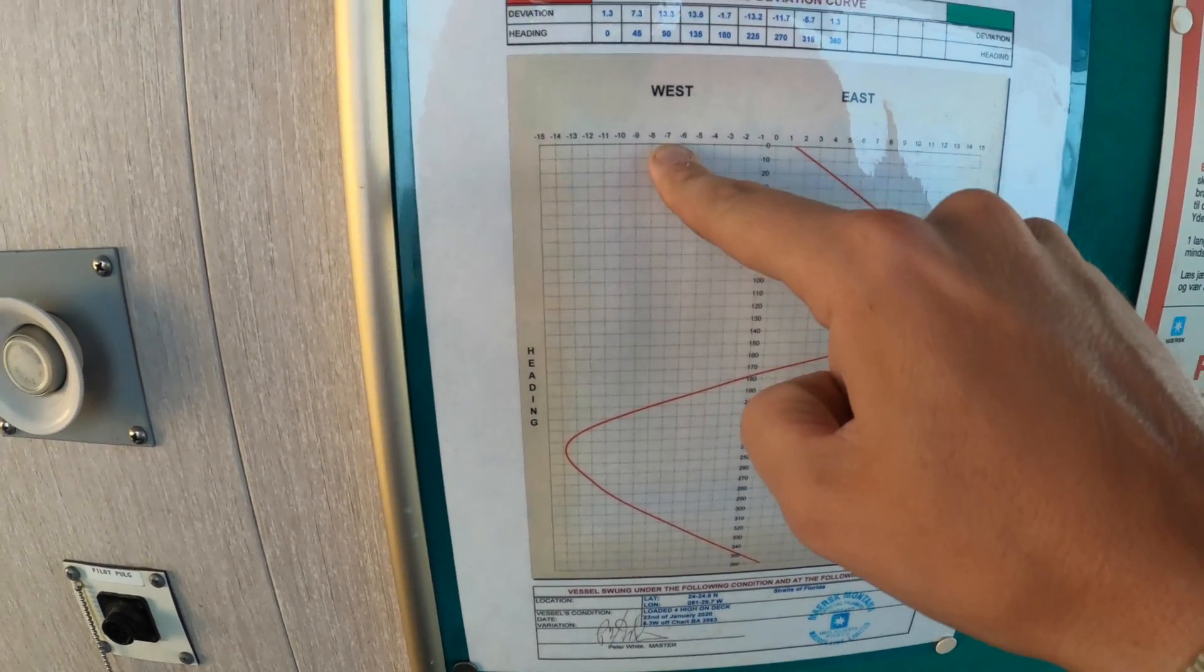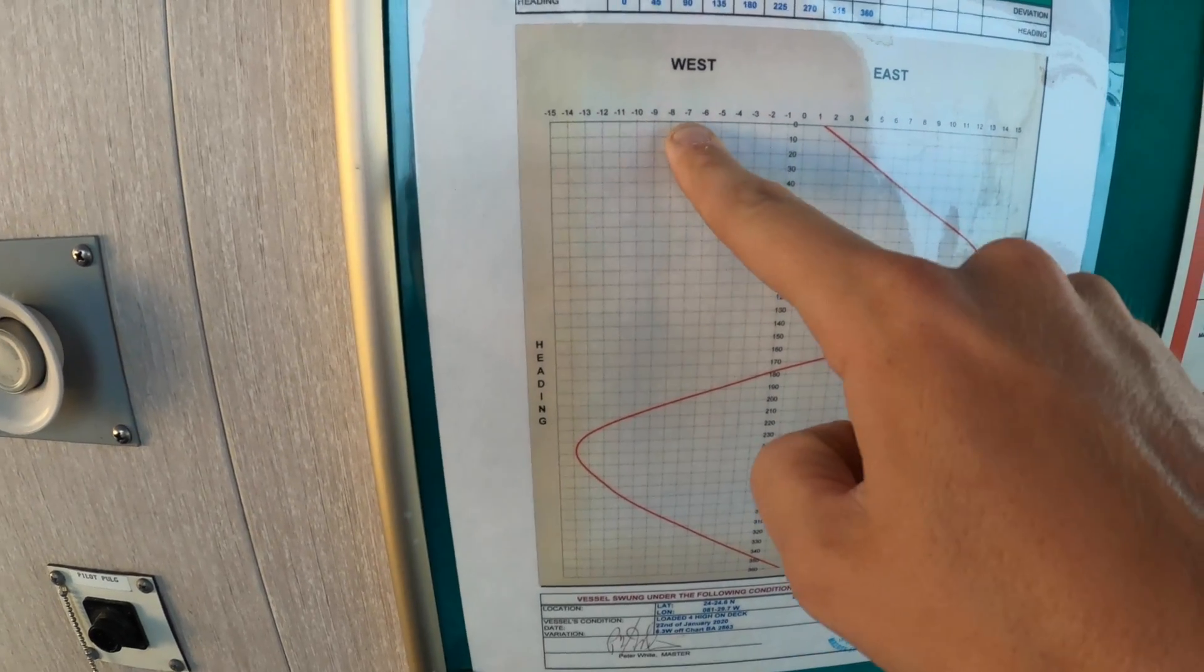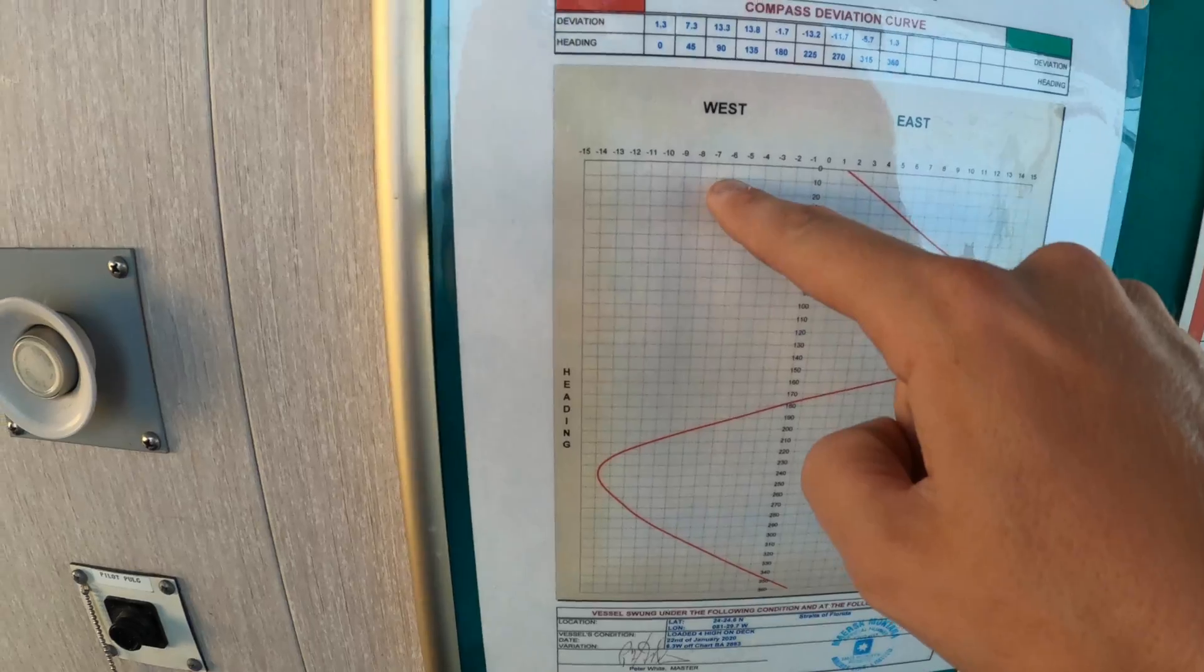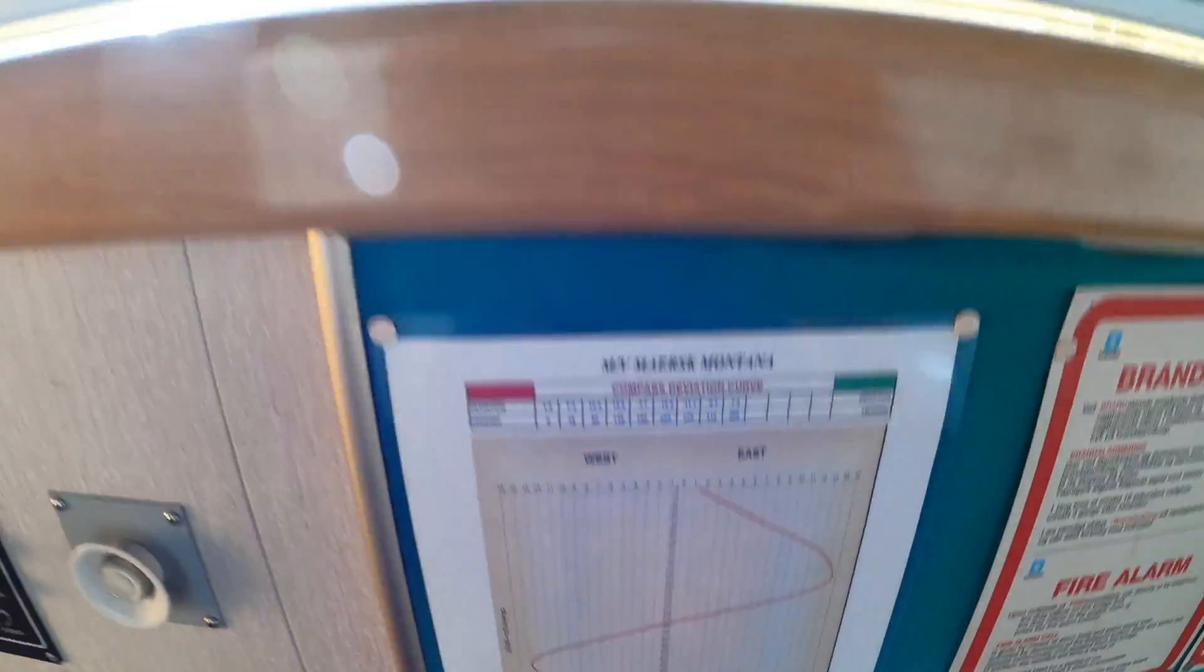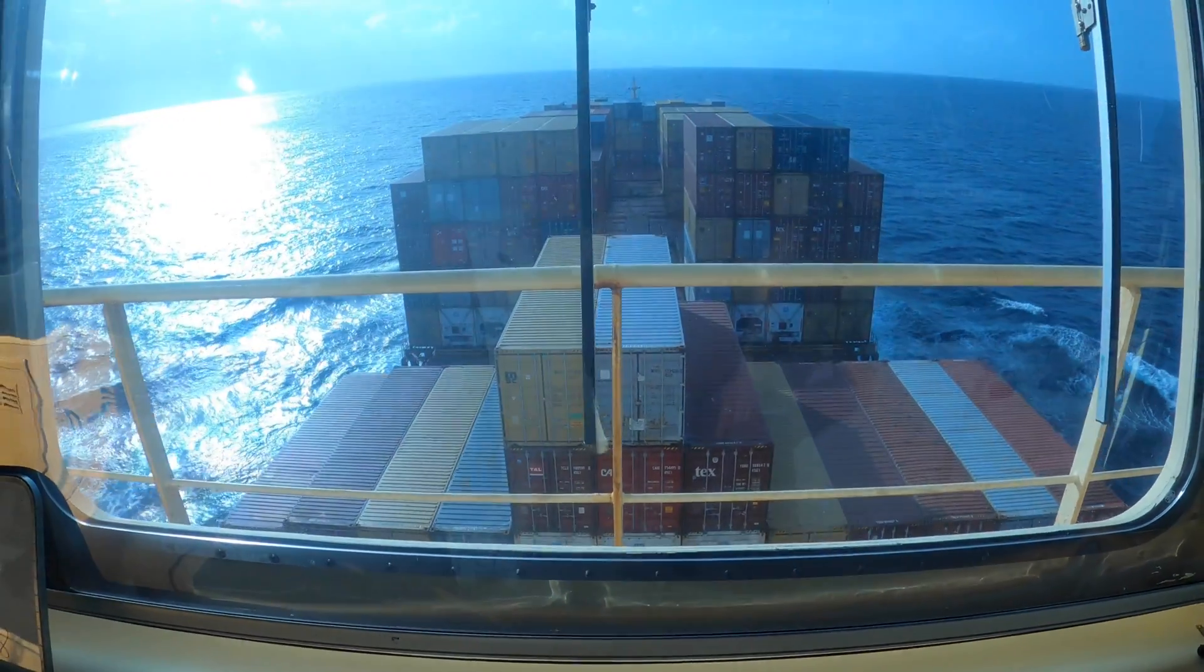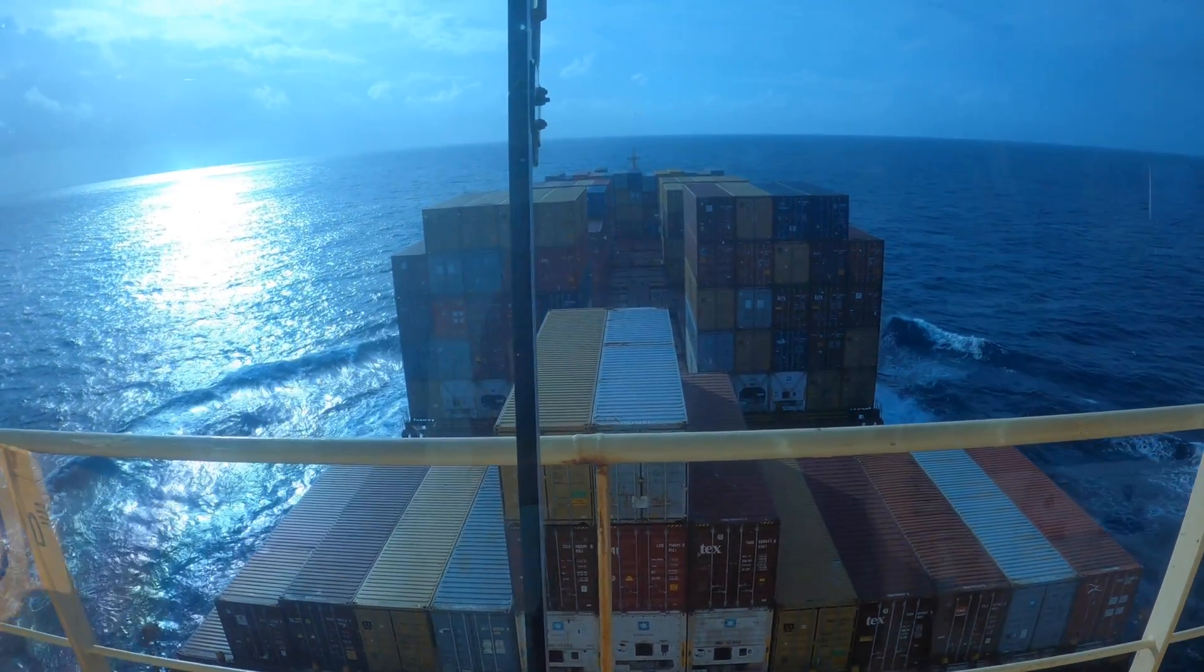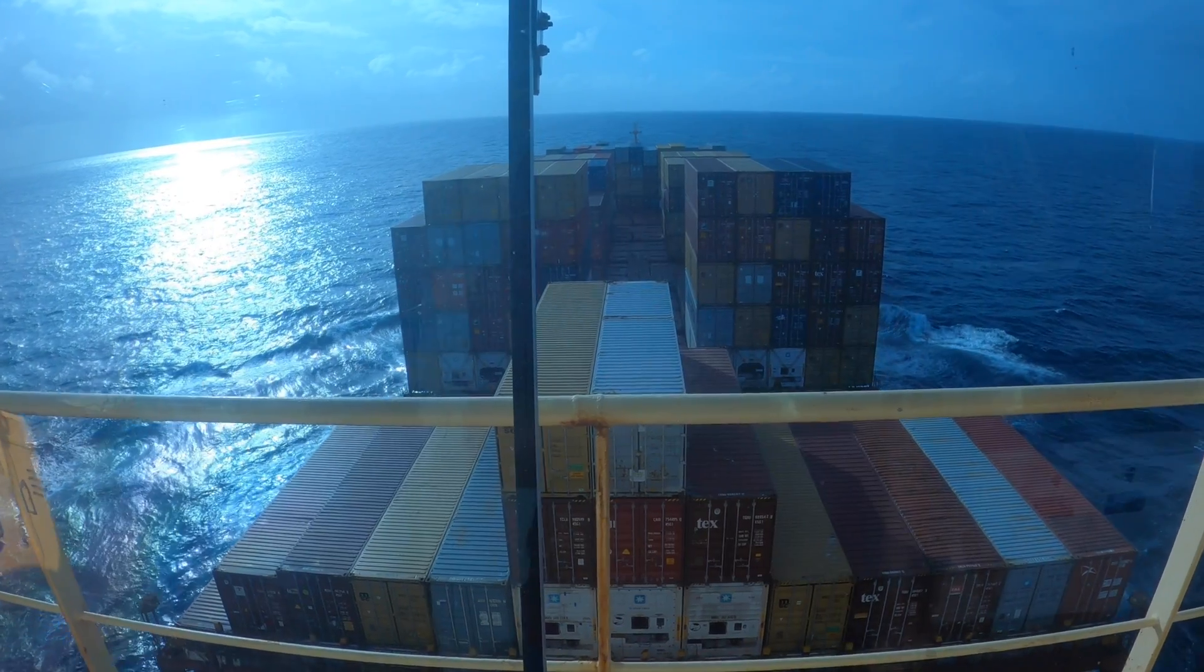But the deviation we came up with was 4.3 west, so it's a little bit off. It's in the right direction, it's not too far off. And again, that could be due to the fact that the containers were in different positions or we were in a different load status from when the deviation table was created.